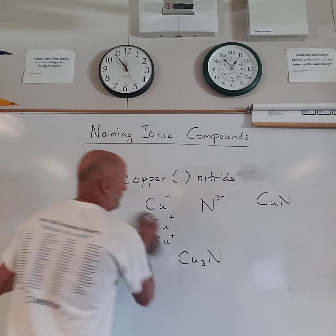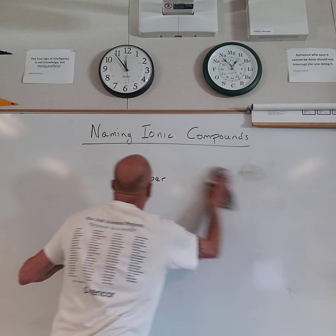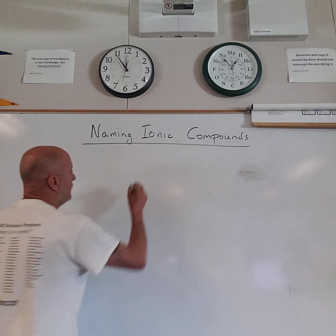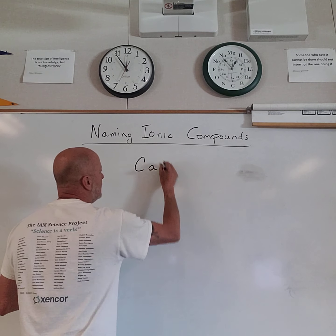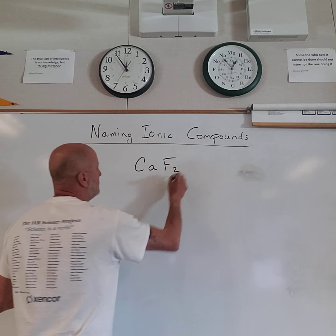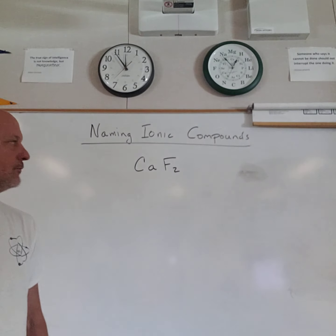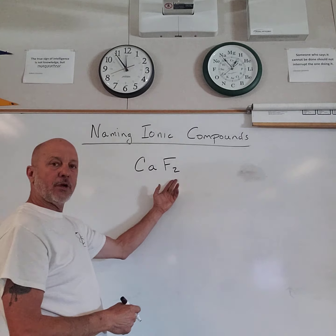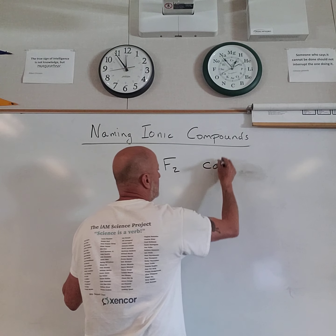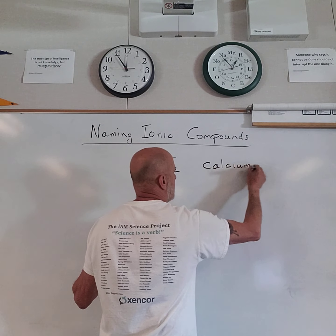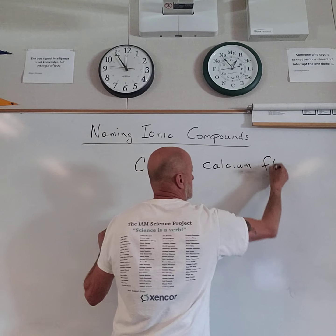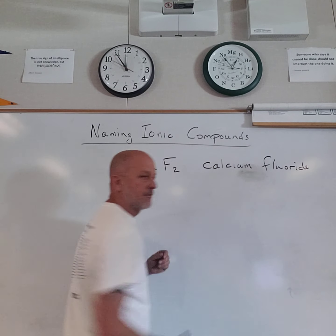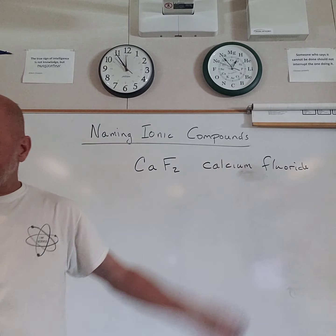Now, what if we're working the other way — going from formula to name? If it's not a transition metal, it's straightforward. For CaF₂, calcium is not a transition metal, so I simply say: calcium fluoride. That's all I have to do.